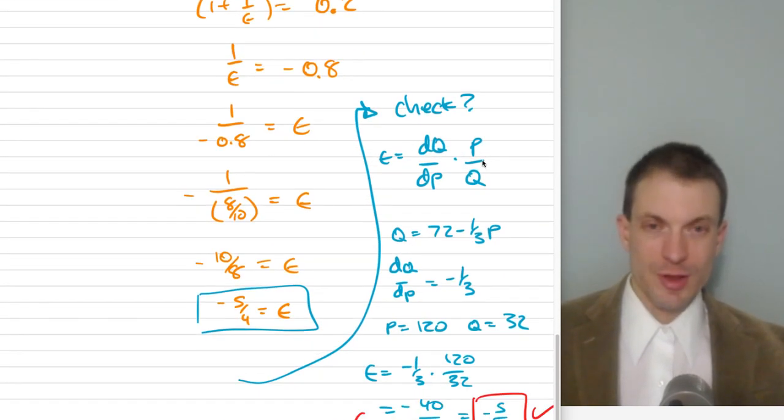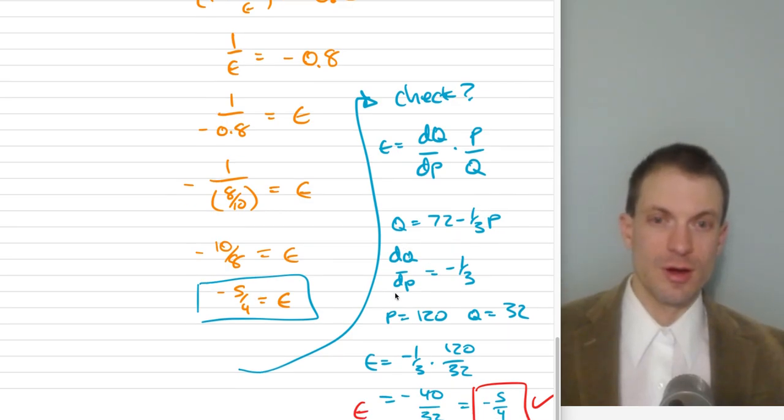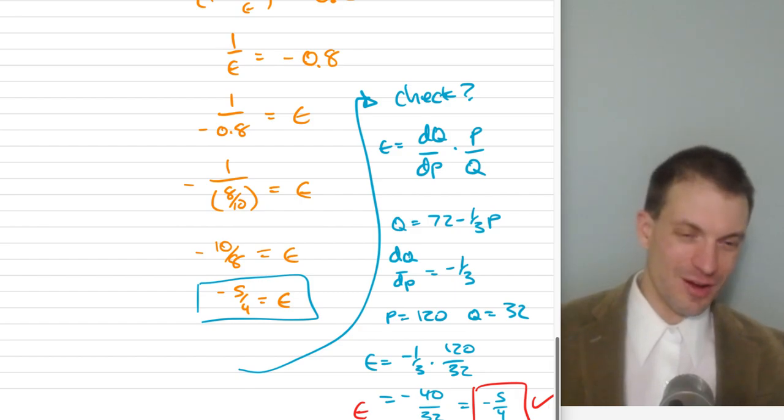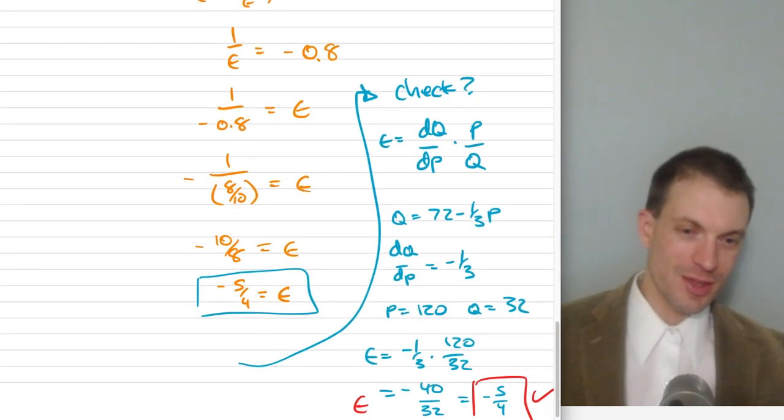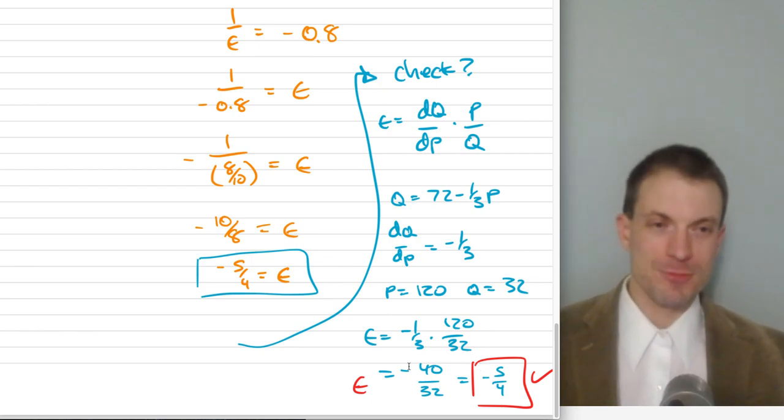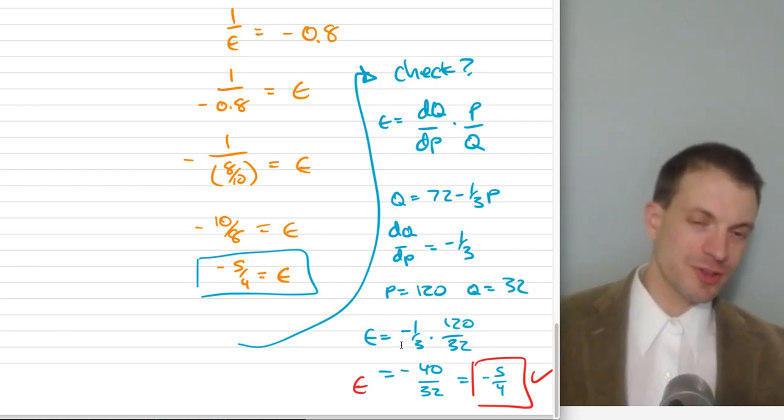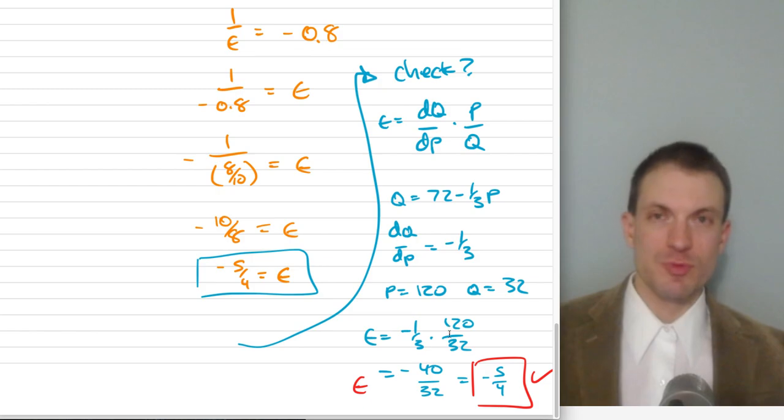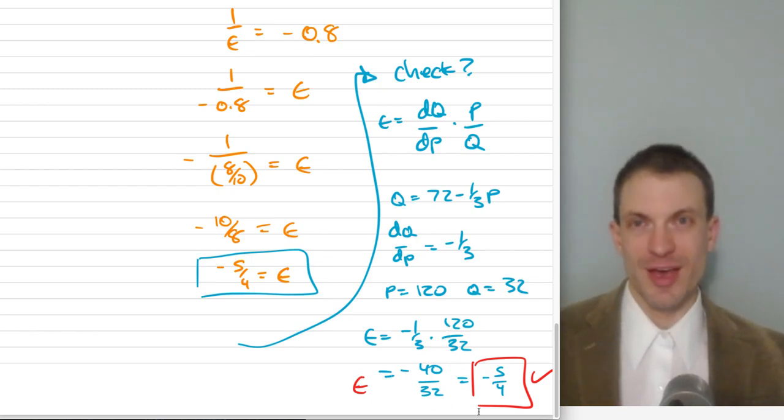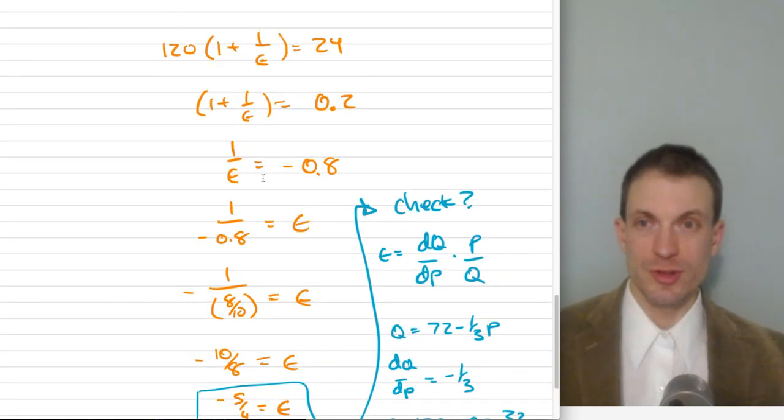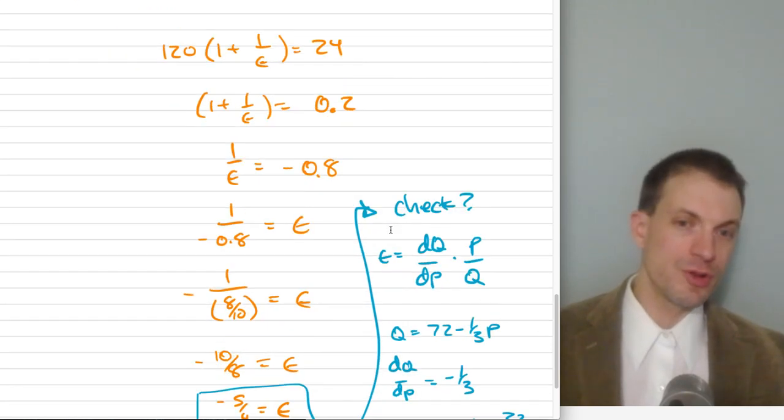We had our price. That was 120. We had our quantity. That was 32. And then the one thing I don't have is I didn't have this on the screen. So we're going to have actually minus 1 third times 120 divided by 32, or we're going to have minus 40 over 32, or we're going to have minus 5 fourths. It's the same. So we have two ways to find the price elasticity of demand at our monopoly's profit maximizing price. We could use this expression, or we could use our elasticity expression.